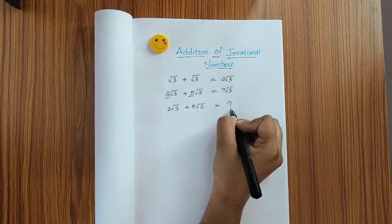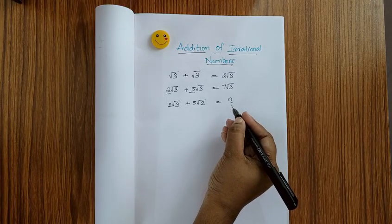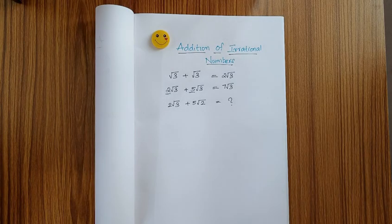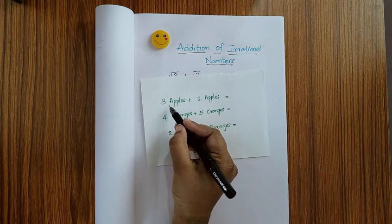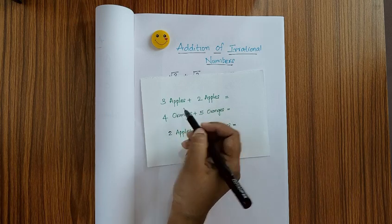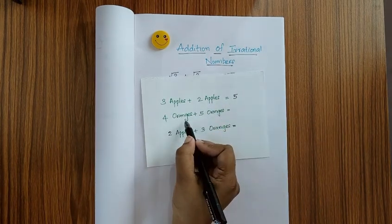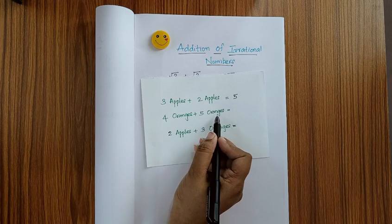3 apples plus 2 apples - what will be the sum? Yes, it will be 5 apples. Now, 4 oranges plus 5 oranges - it will be, yes, 9 oranges.